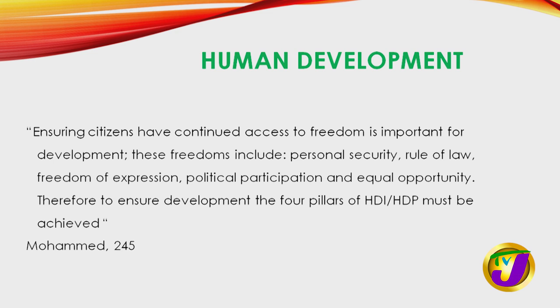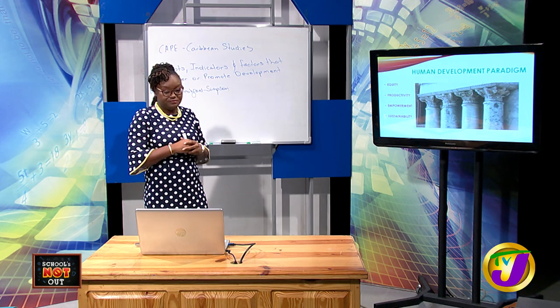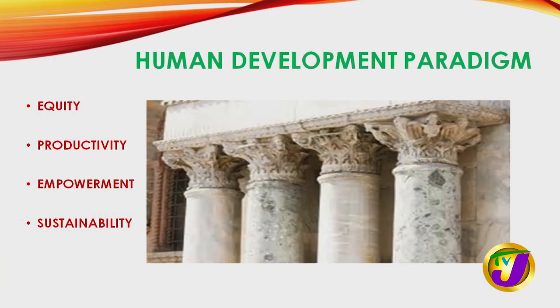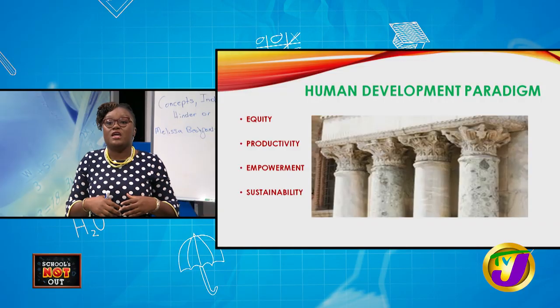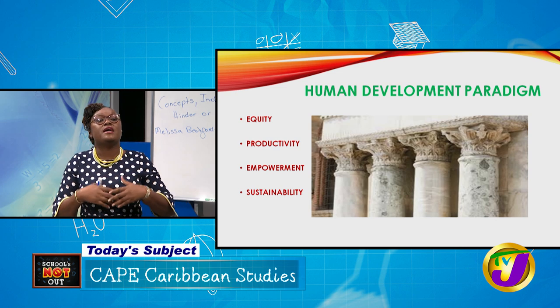To ensure development, the four pillars of the human development paradigm must be used — it is really about how involved people of a country are able to be in the affairs of their own country. The four pillars are: equity, productivity, empowerment, and sustainability, and each of the pillars are intertwined. Equity is really about how much everybody in the society has access to the same resources.